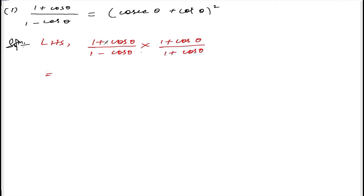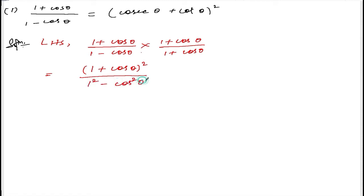Now, 1 plus cos theta into 1 plus cos theta will become 1 plus cos theta whole square, and 1 minus cos theta into 1 plus cos theta will become 1 square minus cos square theta. I am using the formula: A minus B into A plus B equals A square minus B square.